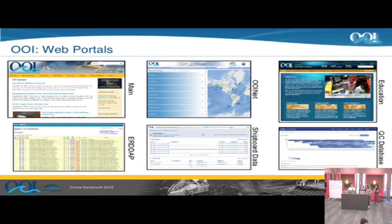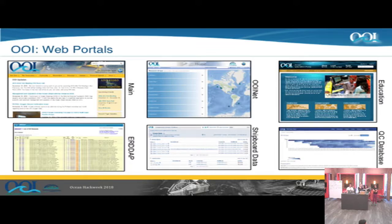Many of you have probably been to the oceanobservatories.org website — that's the main way to get to a lot of information about OOI. OOINet.oceanobservatories.org is the way to get the data portal, data catalog, asset management, and metadata.